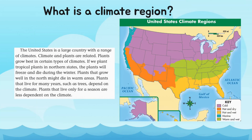What is a climate region? The United States is a large country with a range of climates. Climate and plants are related — plants grow best in certain types of climates. If we plant tropical plants in northern states, the plants will freeze and die during the winter. Plants that grow well in the north might die in warm areas. Plants that live for many years, such as trees, depend on the climate, while plants that live only for a season are less dependent on it.